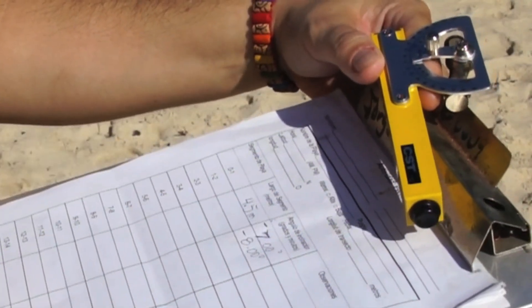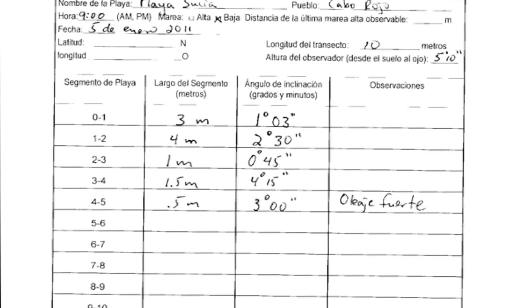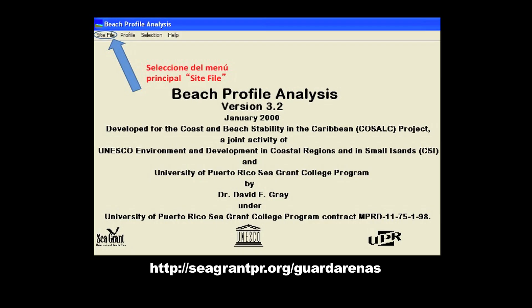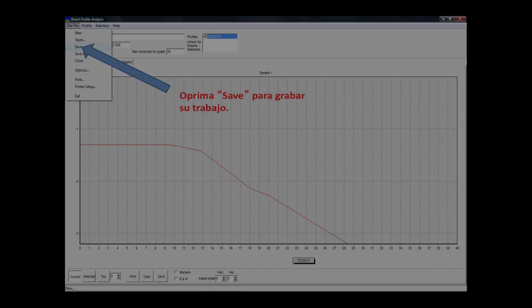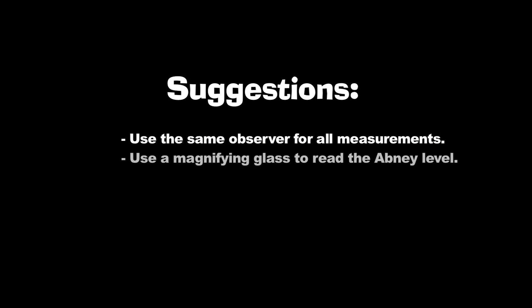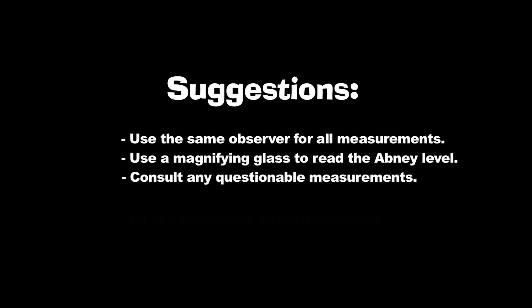Record the measurements in a data sheet. Afterward, enter the data in profile. This program is available in Puerto Rico Sea Grant's Sandwatch blog. Try to use the same person as the observer as often as possible — this will give your results consistency. Reading the apnea level can be difficult due to the small size of the numbers. To avoid difficulties, use the magnifying glass included in the materials pack. Consult any questionable measurements with your partners and work together to reach a consensus.